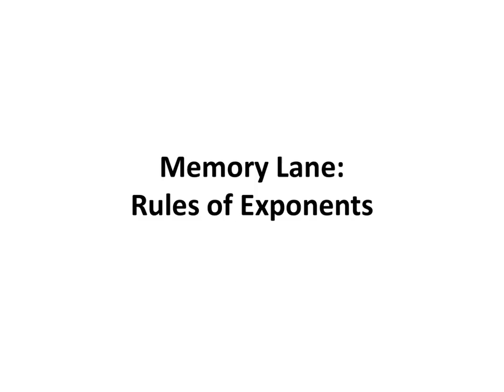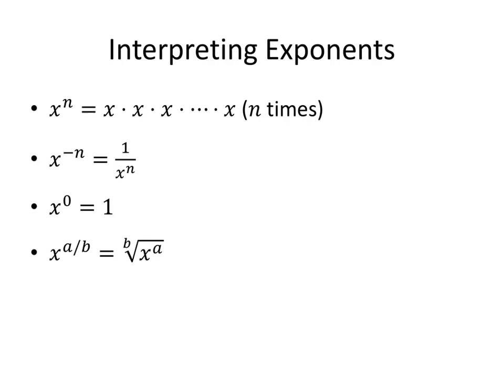In this video, we'll review some of the basic rules of exponents. First, let's review what it means to look at something raised to an exponent. The basic idea is when we have something raised to a power that's a positive whole number, that means we're just multiplying that base, the x, by itself n times. So the exponent tells us how many times we're going to multiply that thing by itself.